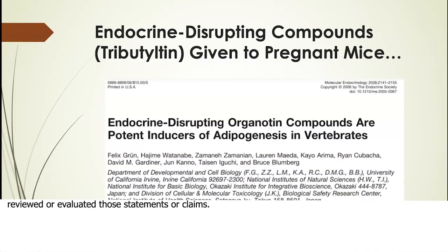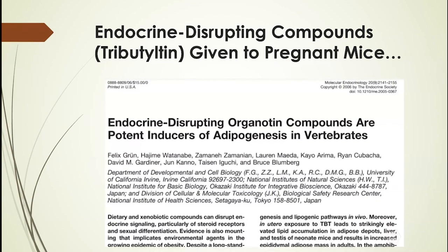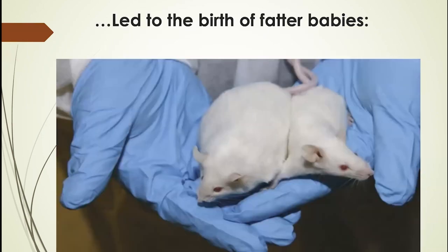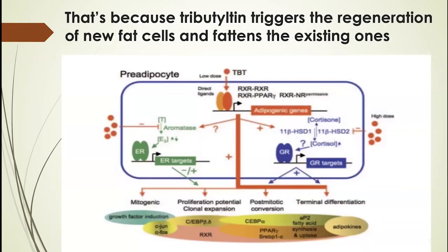Back to tributyltin — in another study they gave this chemical, which disrupts the endocrine system and hormones, to pregnant mice. The mouse on the left that was exposed was fatter. This has been studied scientifically, and it's complicated — it goes after multiple targets. This is a man-made chemical our systems were not designed to deal with.